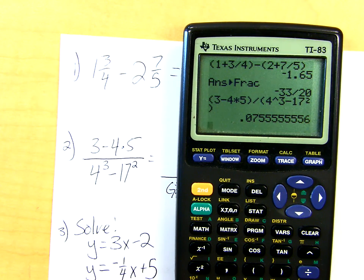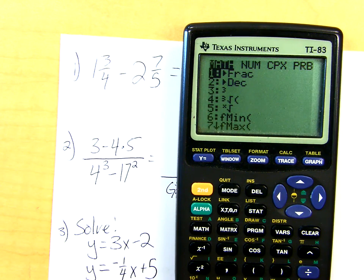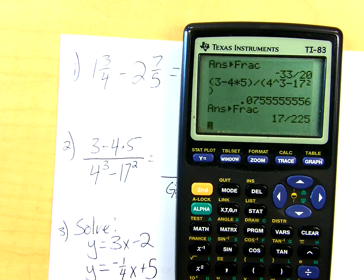You get some nasty decimal. Again, I asked you for a fraction. So hopefully you remember if you did it on number 1, you should be able to do it on number 2. Math. Number 1. Hit enter. There it is in simplest form. 17 over 225.